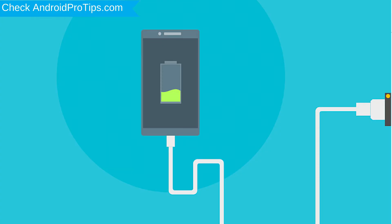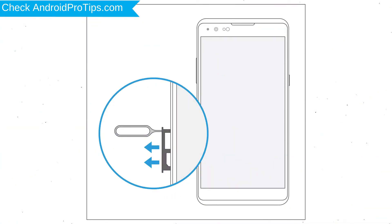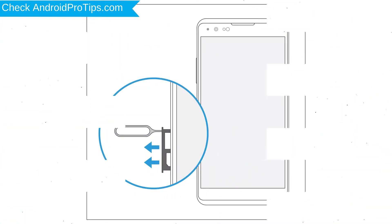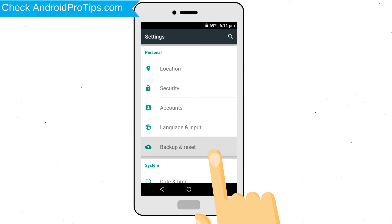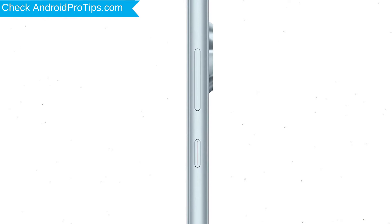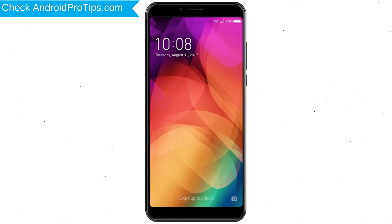Before resetting your mobile, your battery must be above 50%. Remove SD cards and SIMs. Backup your Android mobile data if possible. Power off your mobile by holding the power button. Next, press and hold the volume down button and power button.